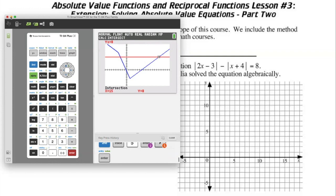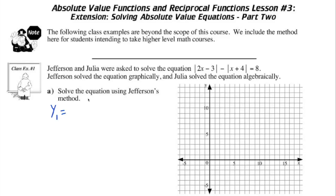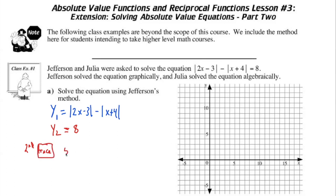We find it's exactly x equals 15. So we have our two solutions. We can say y1 equals the absolute value of 2x minus 3 minus the absolute value of x plus 4, and y2 equals 8. Using second trace, then the calculation menu — number 5 is the intersection — x1 happens at negative 3 and x2 happens at 15, as we saw in the graph.